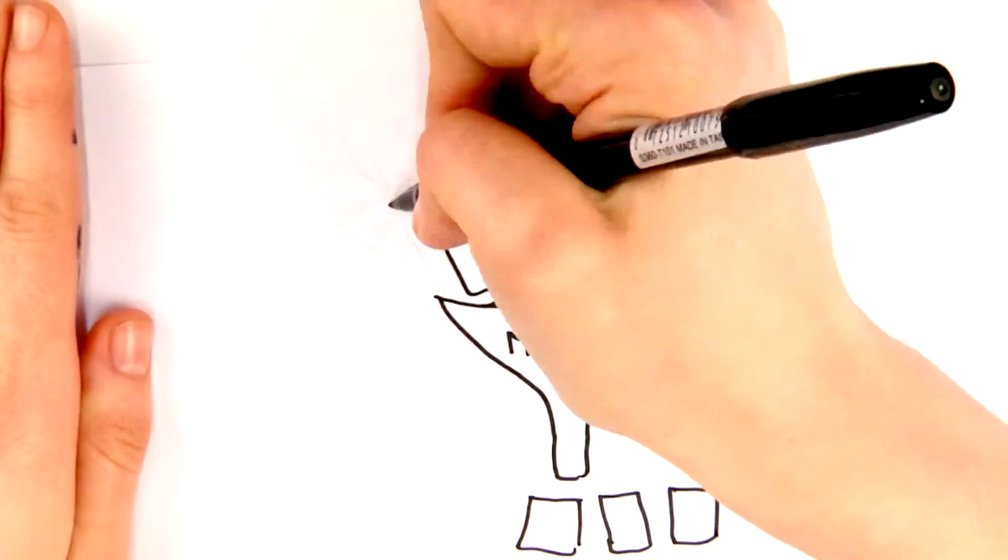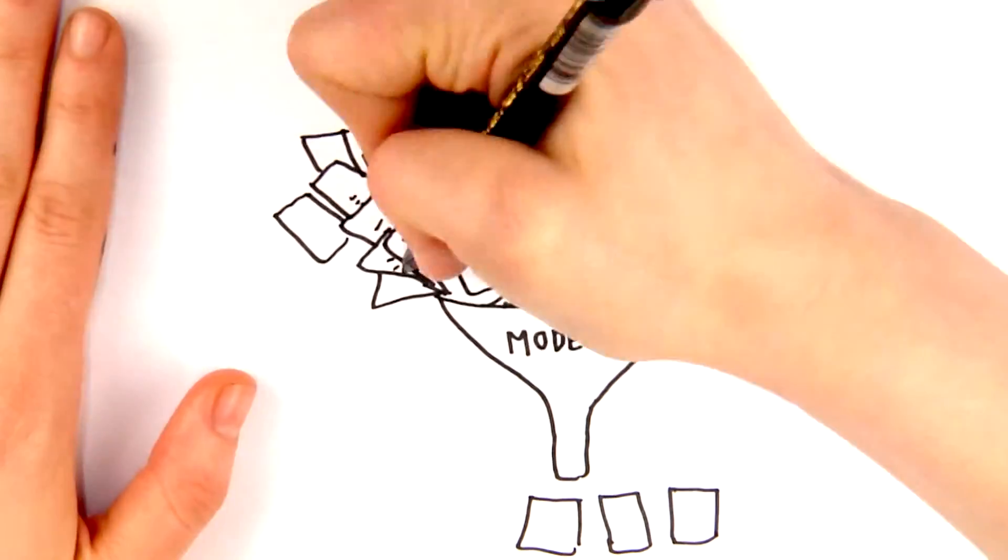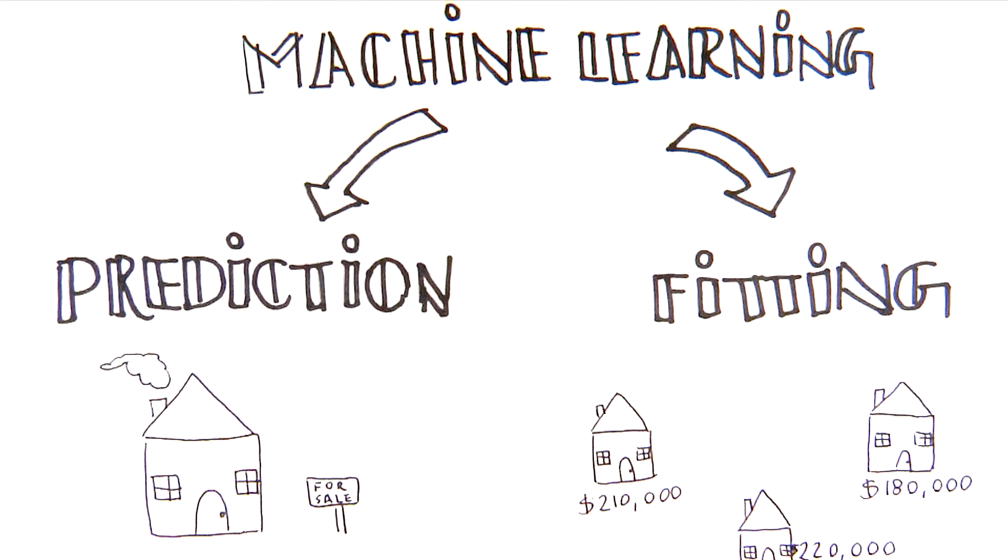In order for a model to get good at making predictions, it must see examples of the data and the correct labels. The process by which a model gets better at making predictions is called fitting.